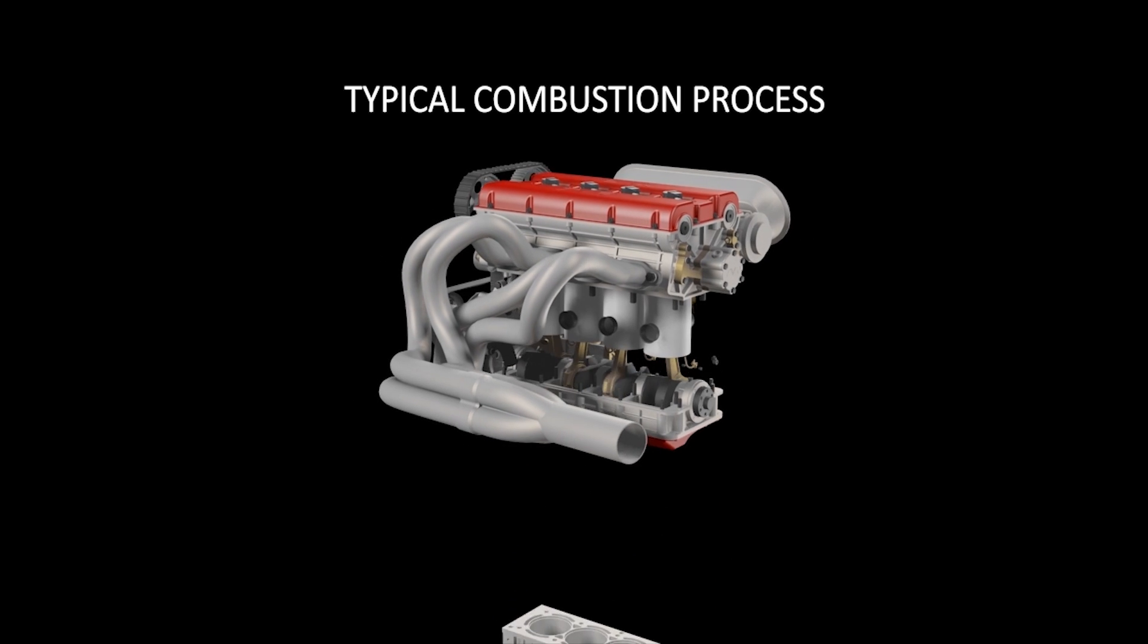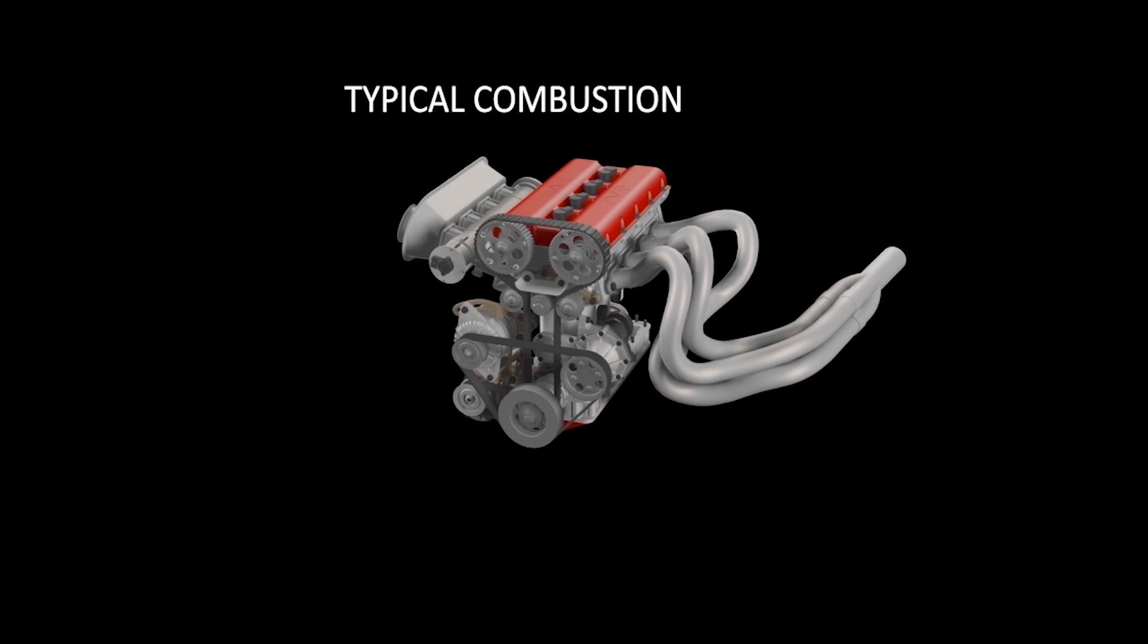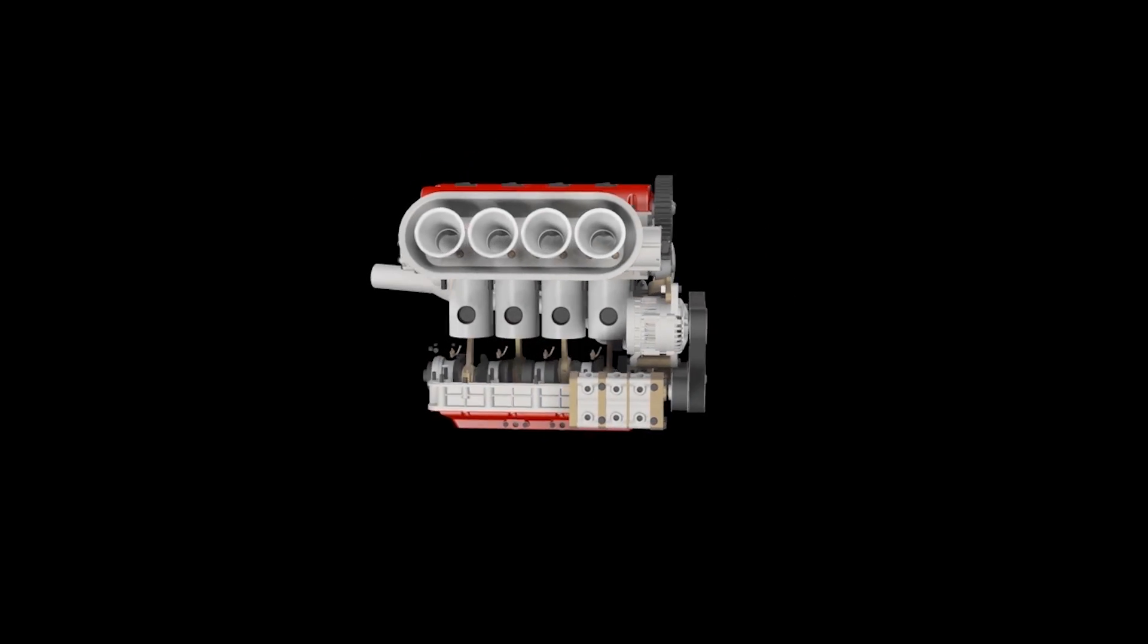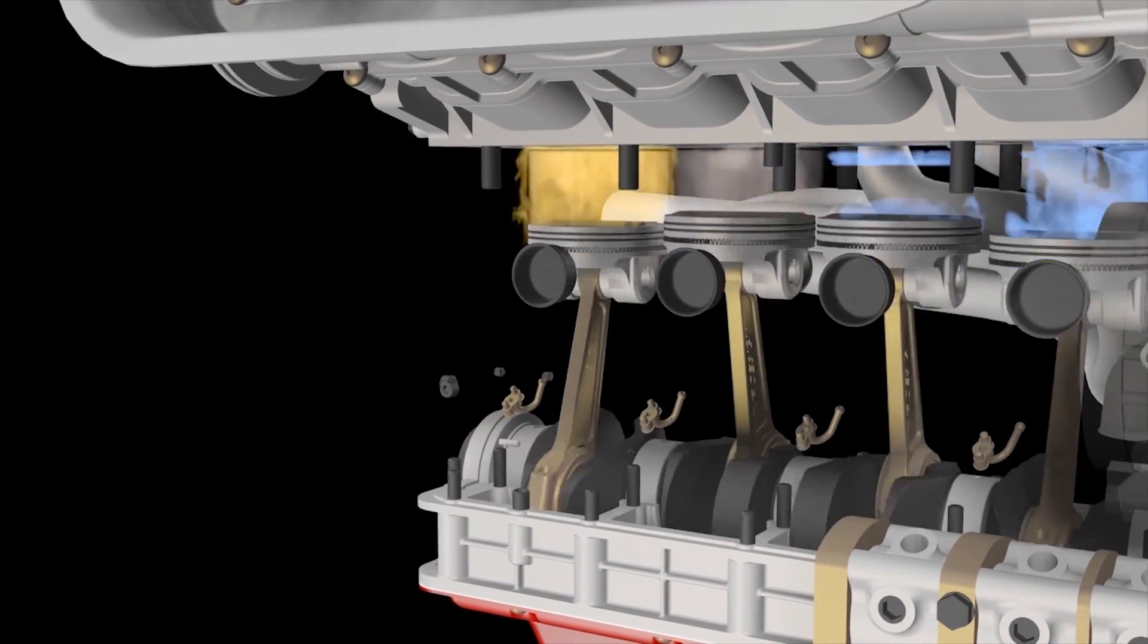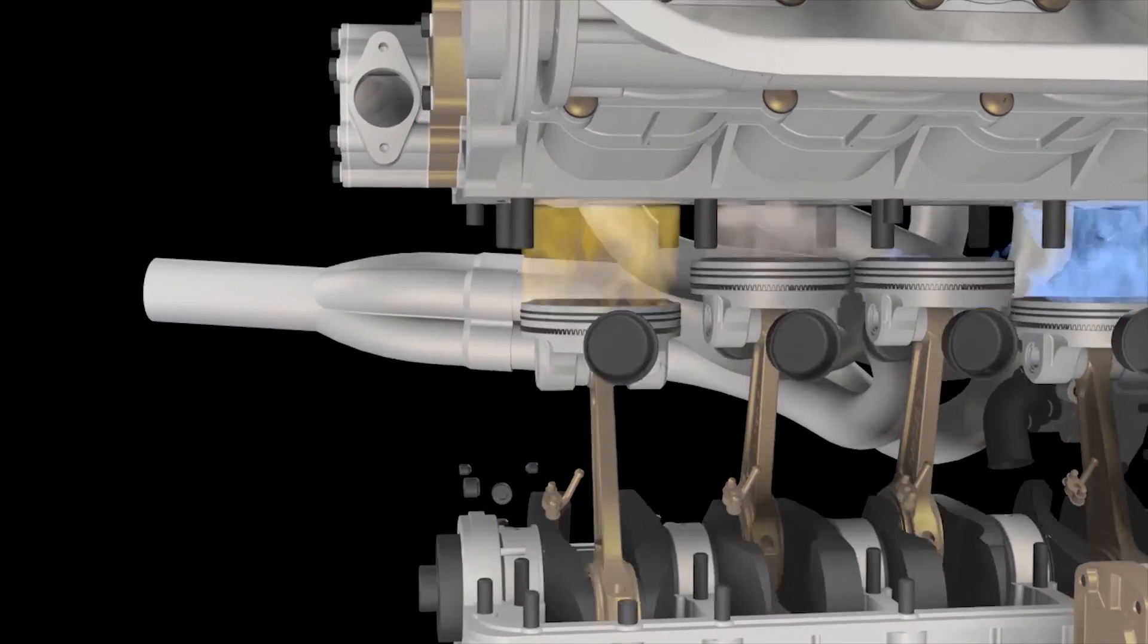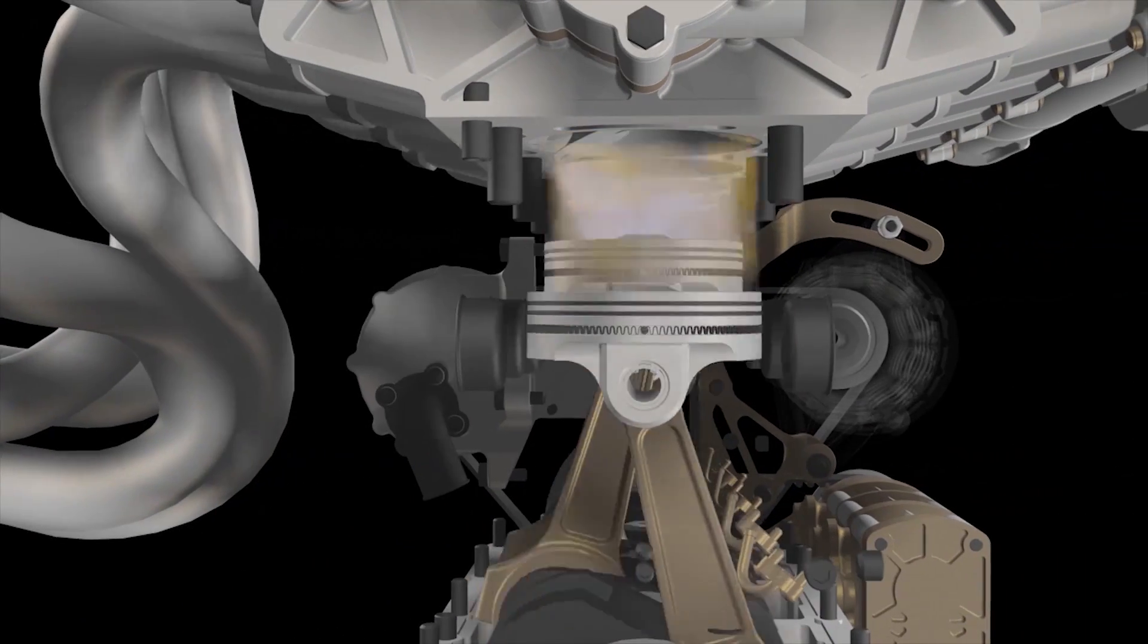A four-stroke engine rotates the crank twice in a cycle. At 5,000 RPM, the crank rotates 5,000 times every minute, completing 2,500 four-stroke cycles in a single minute. Each half crank rotation in a cycle is called a stroke.